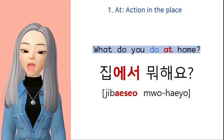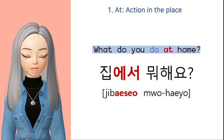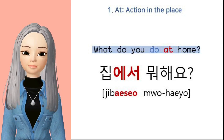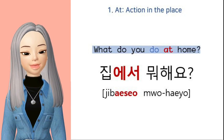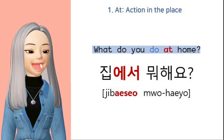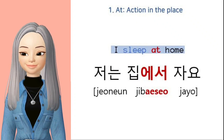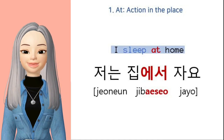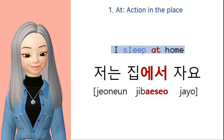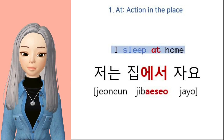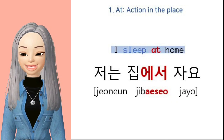Let's look at an example. Let's see the case when the verb is 'do' — an action verb. For the sentence 'What do you do at home?', in Korean it becomes 집에서 뭐 해요? Another example, the answer 'I sleep at home' — sleep is again an action verb, so you use 에서: 저는 집에서 자요.